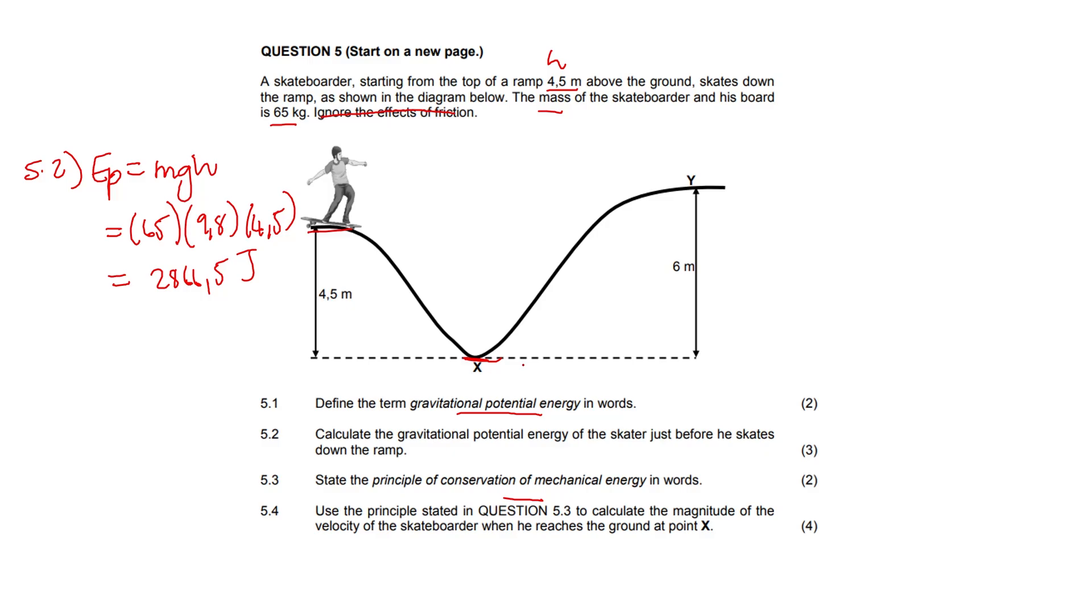We're going to use our top-bottom approach. We have to have our total mechanical energy. We know that total mechanical energy is EP plus EK, and we have to calculate the velocity. So we have to take top-bottom. 5.4 will look like this: mechanical energy top equals mechanical energy bottom.